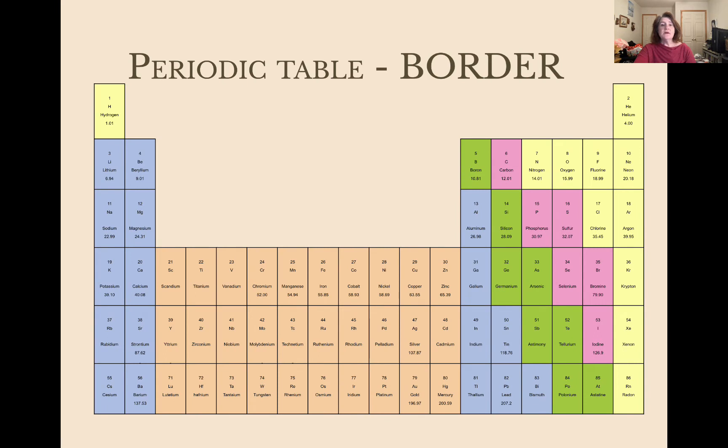On your periodic table, let's also add the border. The border separates things. So draw a horizontal line between elements 5 and 13, vertical between 13 and 14, horizontal between 14 and 32, vertical between 32 and 33, horizontal between 33 and 51, vertical between 51 and 52, horizontal between 52 and 84, and vertical between 84 and 85.